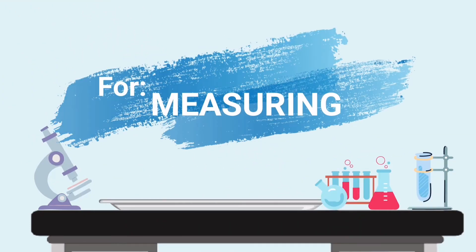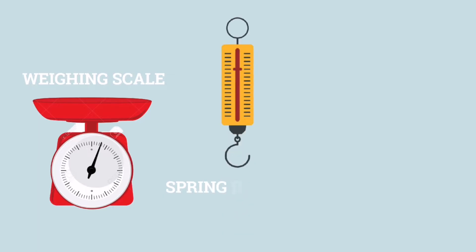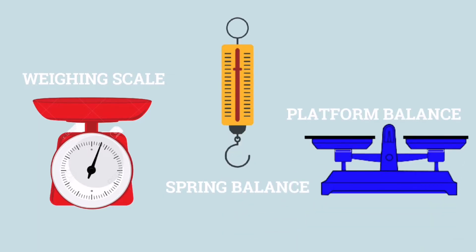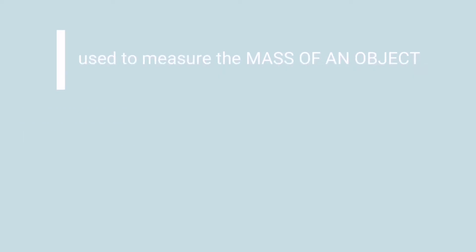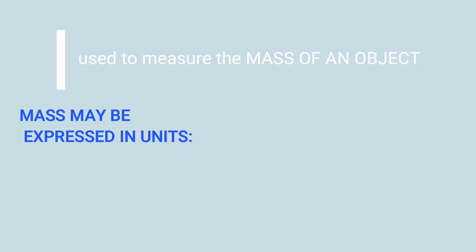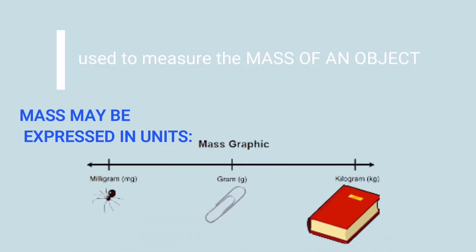Tools for measuring. Weighing scale, spring balance, platform balance, and others — these tools are used to measure the mass of an object. Mass may be expressed in units: milligrams, grams, or kilograms.